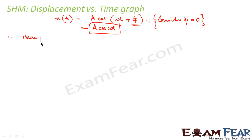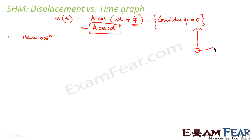First, let us calculate its value at the mean position. Let us think from where the motion starts. Let us suppose this is your pendulum. If you do not apply any force on the pendulum, it will not move on its own — it will be in its mean position. Now let us suppose you take this mass to the extreme end and then release it. What will happen? It will start swinging.